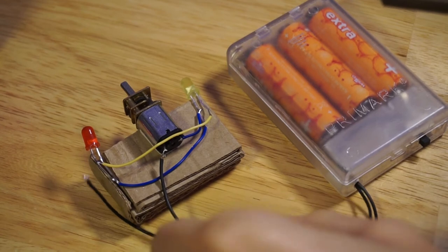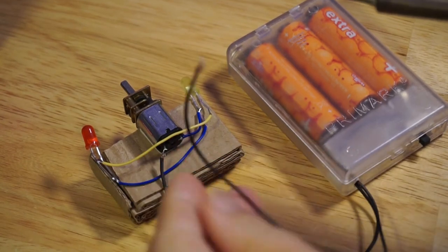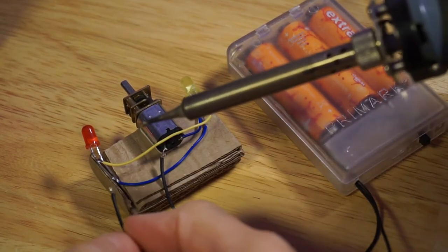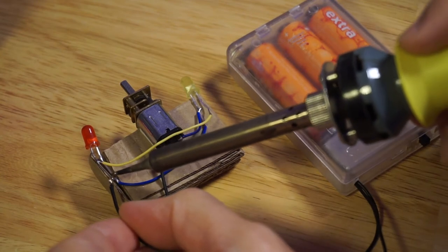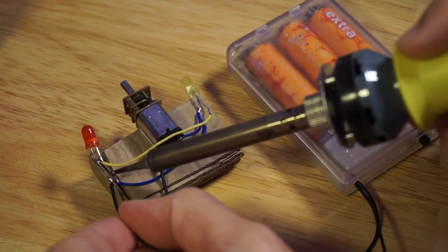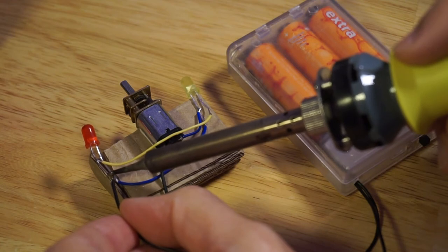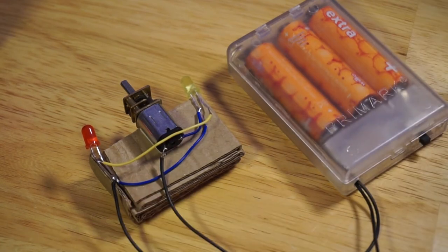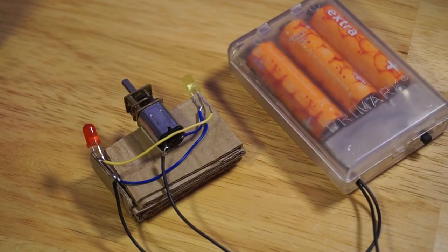Now solder up the battery supply onto the anodes of the LEDs, just to one of them since they're connected. And also to the other terminal of the DC motor, putting it in series.